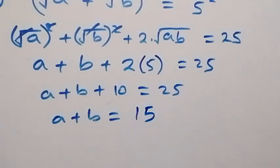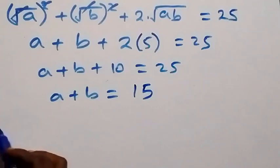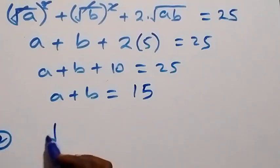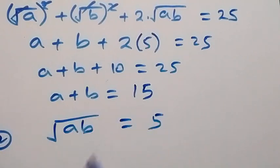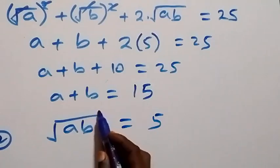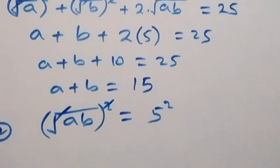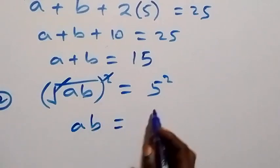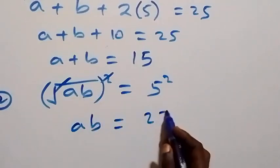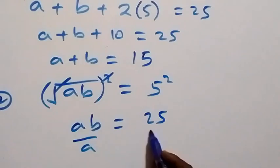From equation two, we have root ab equals to five. Let's also square both sides. Square cancels square root, and we have ab equals to five squared, which is twenty-five.